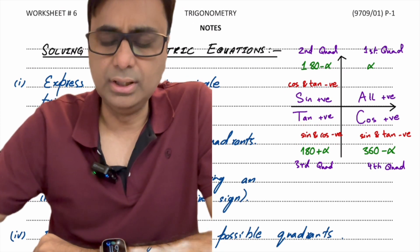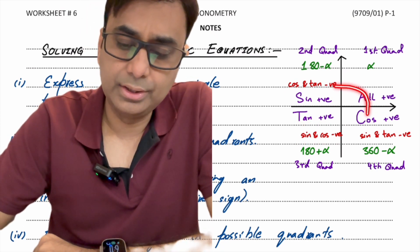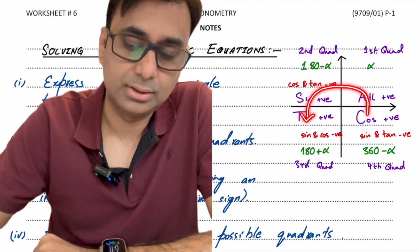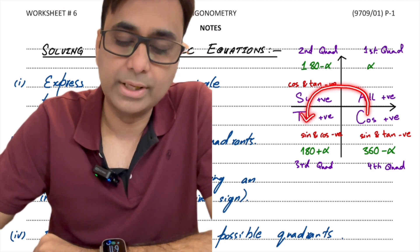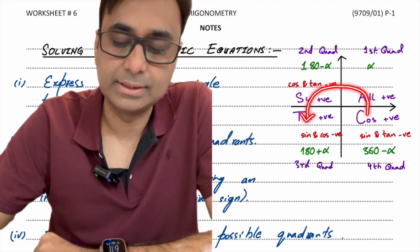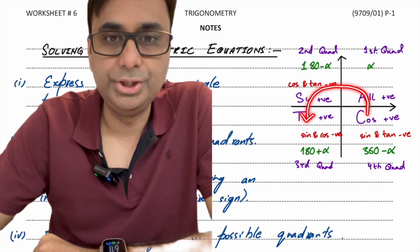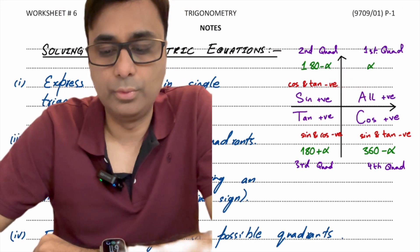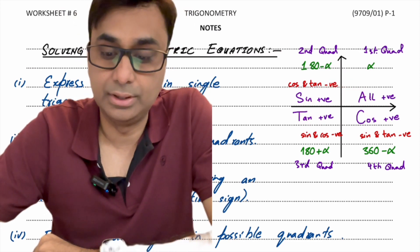To help remember which ratio is positive in which quadrant, you can use the word CAST. Going anti-clockwise, the initial letters form the word CAST. That mnemonic should help you learn it.